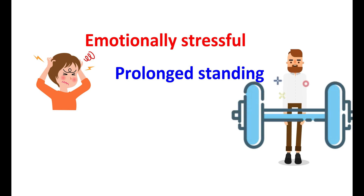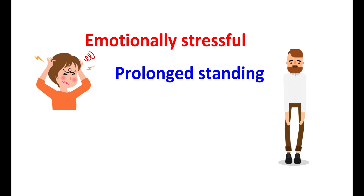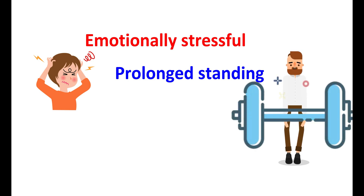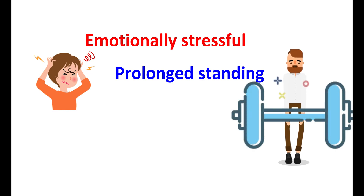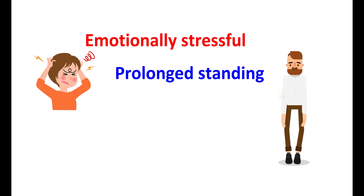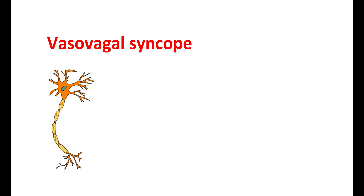It can also be stimulated by many other factors like the sight of blood or sudden emotional distress. This stimulus causes the heart rate and blood pressure to drop rapidly, leading to a fainting response. Midodrine can help prevent a sudden drop in blood pressure that often leads to fainting. Vasovagal syncope involves the nervous system, especially the vagus nerve, which plays a key role in the vasovagal response.